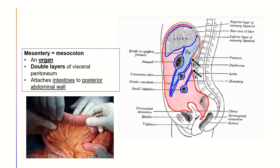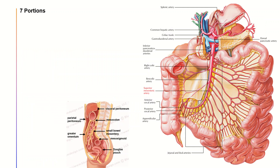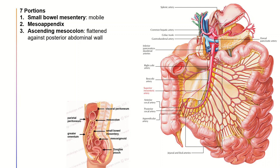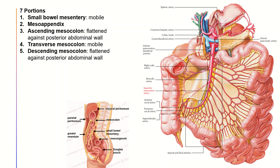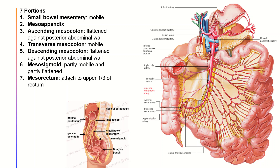In real life, this is what the mesentery looks like. It can be further divided into seven portions, including the small bowel mesentery, the mesoappendix shown here, the ascending mesocolon which is flattened against the posterior abdominal wall, the transverse mesocolon which is mobile, the descending mesocolon which is also flattened against the posterior abdominal wall, the mesosigmoid which is partly mobile and partly flattened, and the mesorectum which attaches to the upper one third of the rectum.